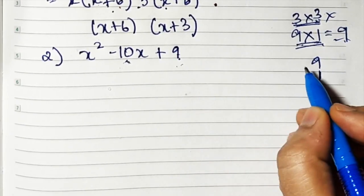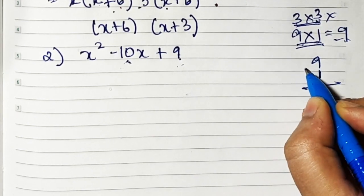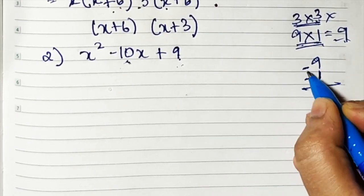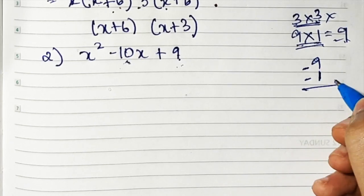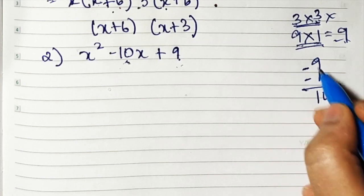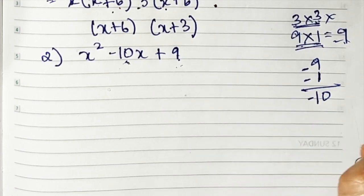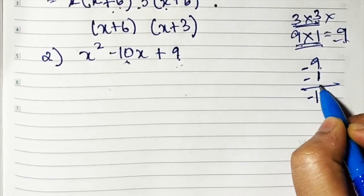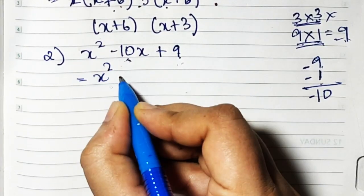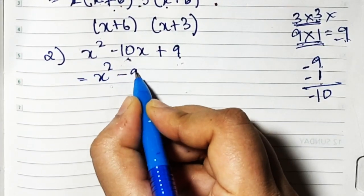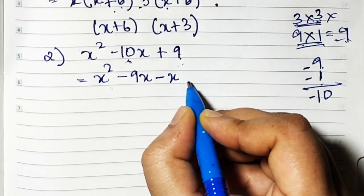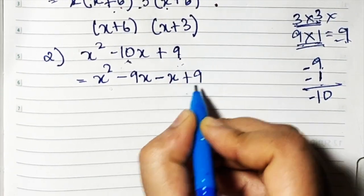9 and 1 have two signs. If I put minus here and minus here, minus times minus is plus. So 9 and 1 becomes 10 and the sign of the greater number is minus. So basically I'll have to take minus 9 and minus 1. So: x squared minus 9x minus 1x. Instead of 1x I'll just write x, plus 9.